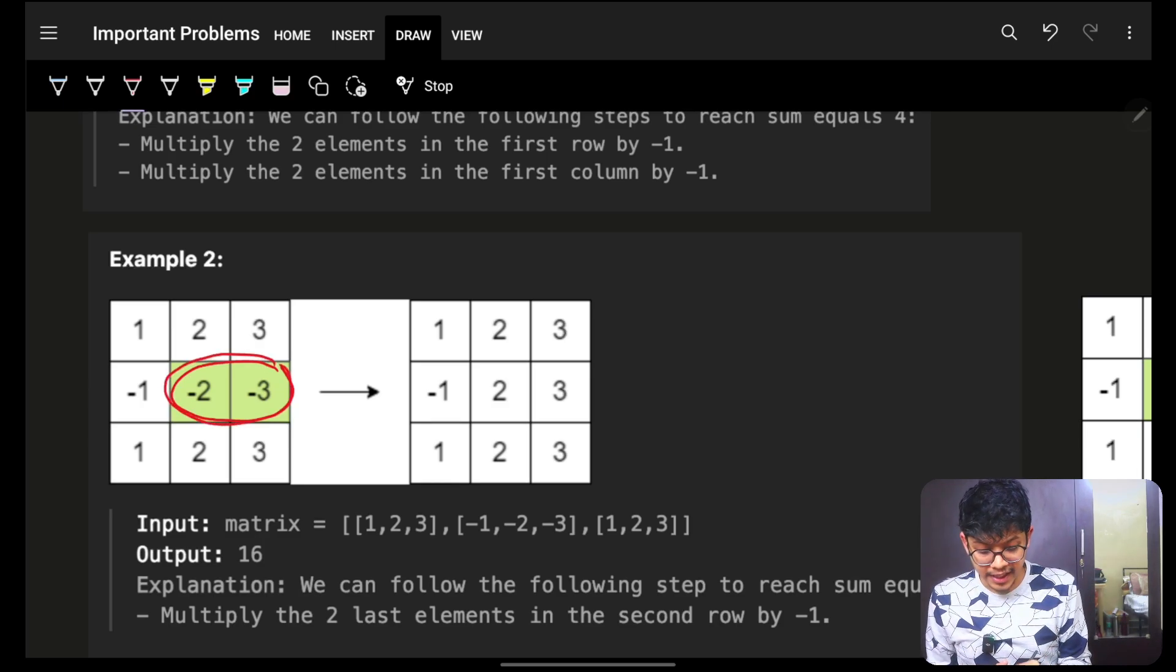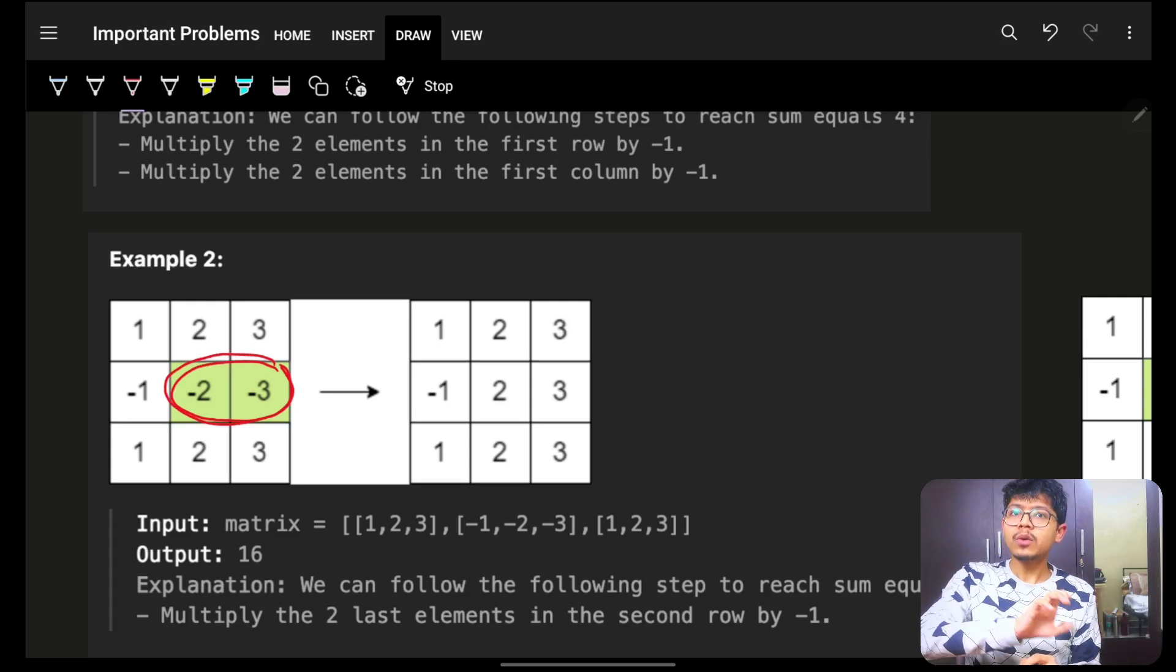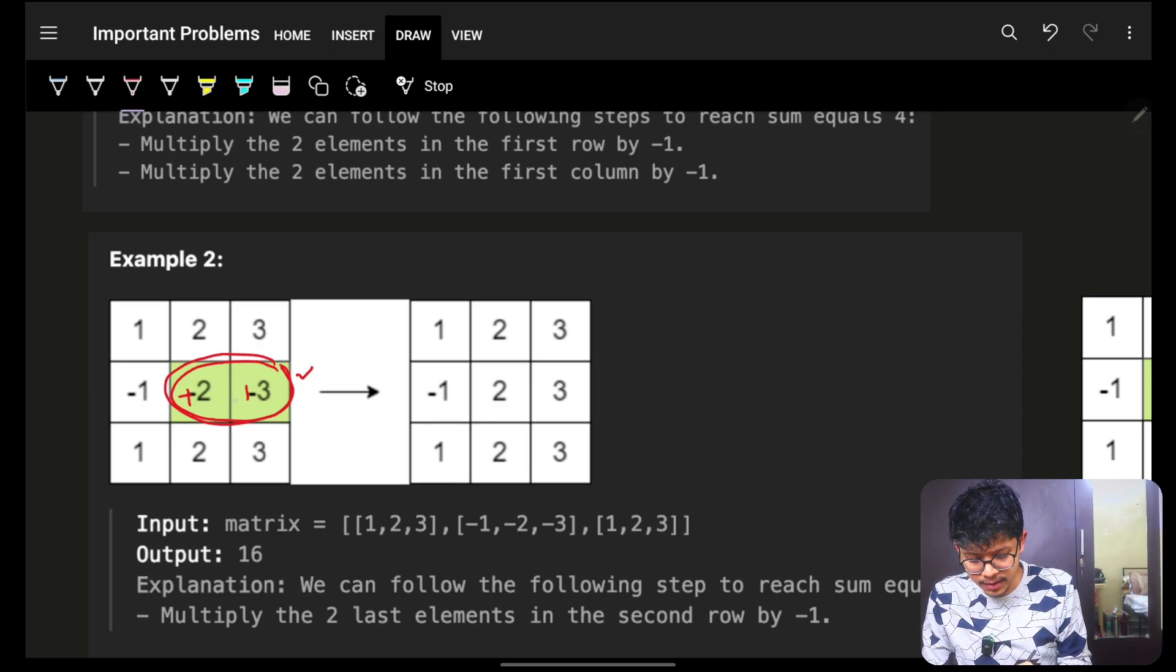And obviously, the instinct goes greedily. The pairs which I am going to make should be the one which are having the maximum value. Which are having the maximum value. And I say maximum, maximum absolute value. Because these will become positive.